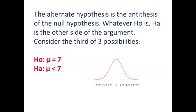Now let's consider the third case. The null hypothesis is mu equals 7. The alternate hypothesis is mu less than 7. In this case, we take this curve, and we've got to identify a lower bounds for mu equals 7.